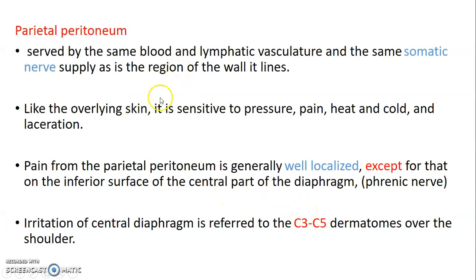The parietal peritoneum has the same blood supply, lymphatic drainage, and somatic nerve supply as the abdominal pelvic wall. Just like the overlying skin, this parietal peritoneum is sensitive to pressure, temperature, and pain.